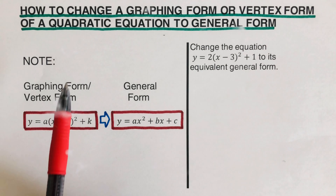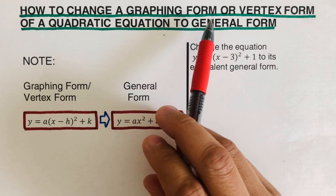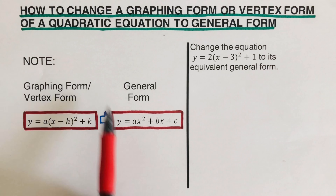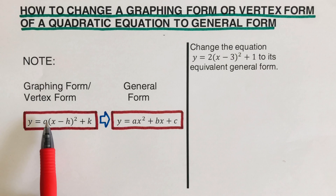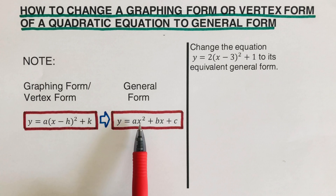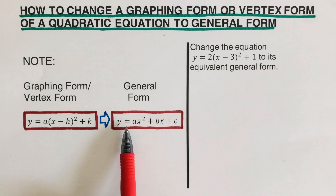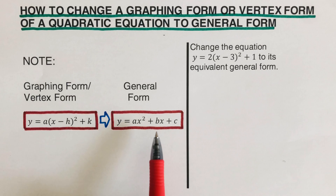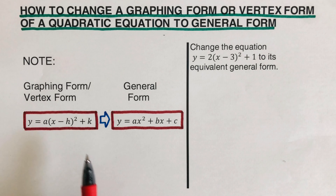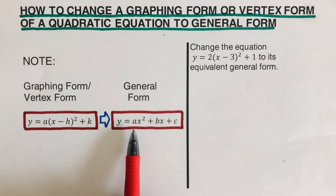Hello everyone. In this video we will be changing a graphing form, or vertex form, of a quadratic equation to its equivalent general form. The vertex form has h and k as the vertex. On the right side, the general form is y equals ax squared plus bx plus c. There is also another video about changing general form to graphing form — link is in the description. Today, the arrow goes from graphing form to general form.